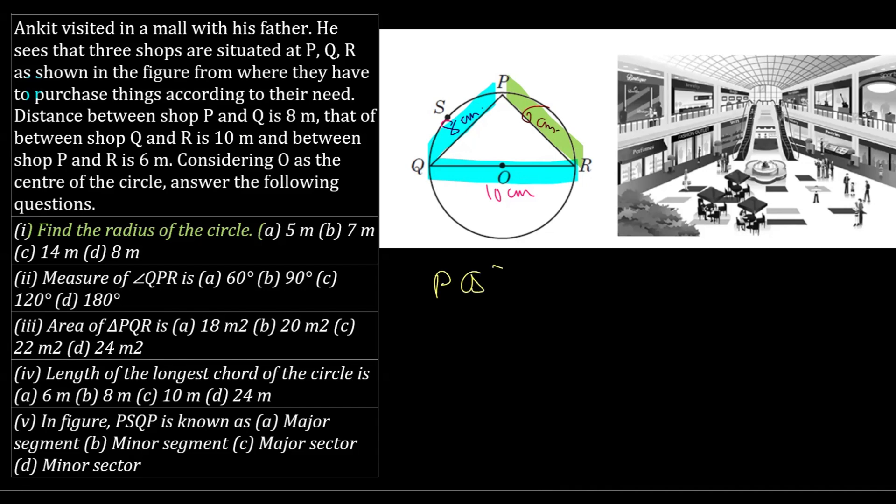Look, what is the sum of the squares of two sides? If I say PQ square, let's find out their values. What is PQ square here? 8 square and that is 64. And if I say what is PR square? That is 6 square, which is 36. And if I say QR square, it comes out to be 10 square, which is 100.